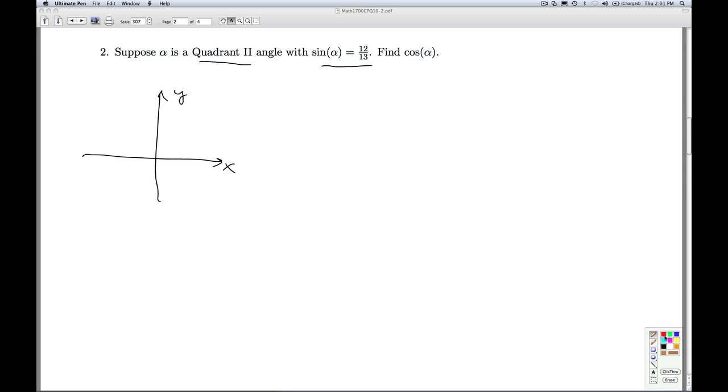X, Y. All we know about alpha is that it's a quadrant two angle to start off with. We don't know if alpha is positive or negative or how many times it's gone around. So all we can do is we know the initial side is the positive x-axis and the terminal side is somewhere over here in quadrant two. Okay, so this is the terminal side of alpha.